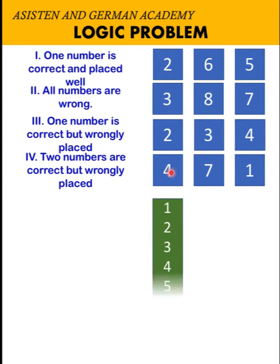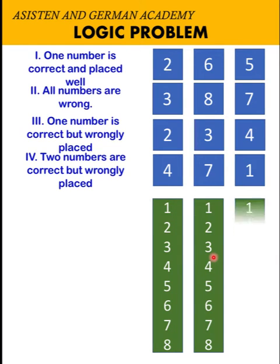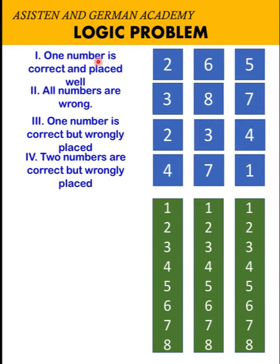So that means for the first column, we can choose from digits 1 to 8, the same with the second and the third column. The first statement says that one number is correct and is placed well. It could be 2 in the first digit, 6 in the second digit, and 5 in the last digit. At this point, it is best to eliminate first those numbers that we know are not solutions to our puzzle.